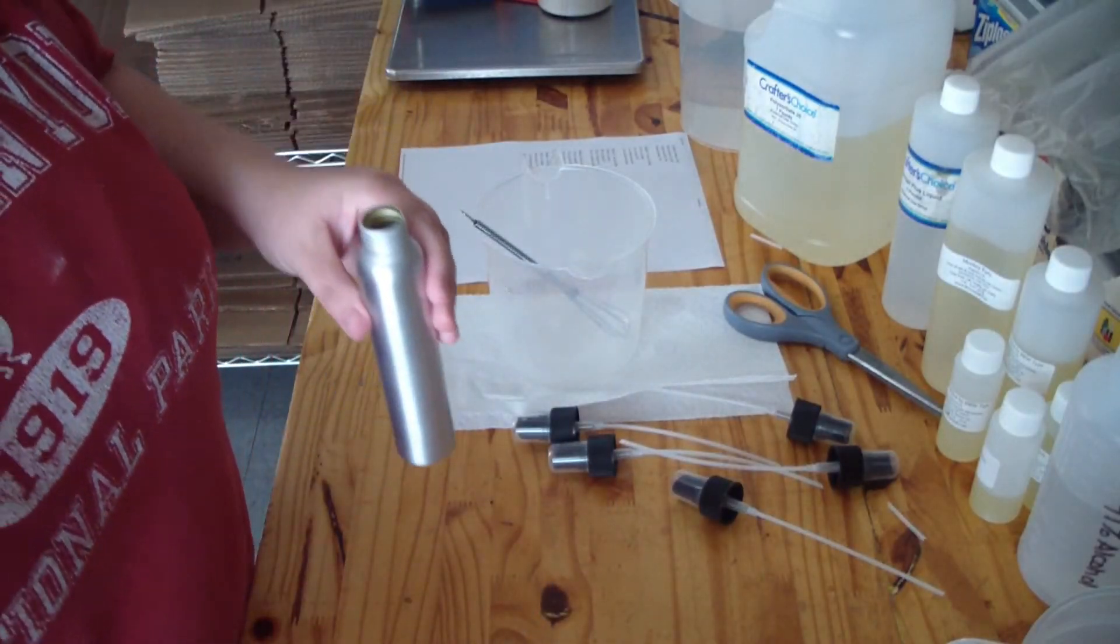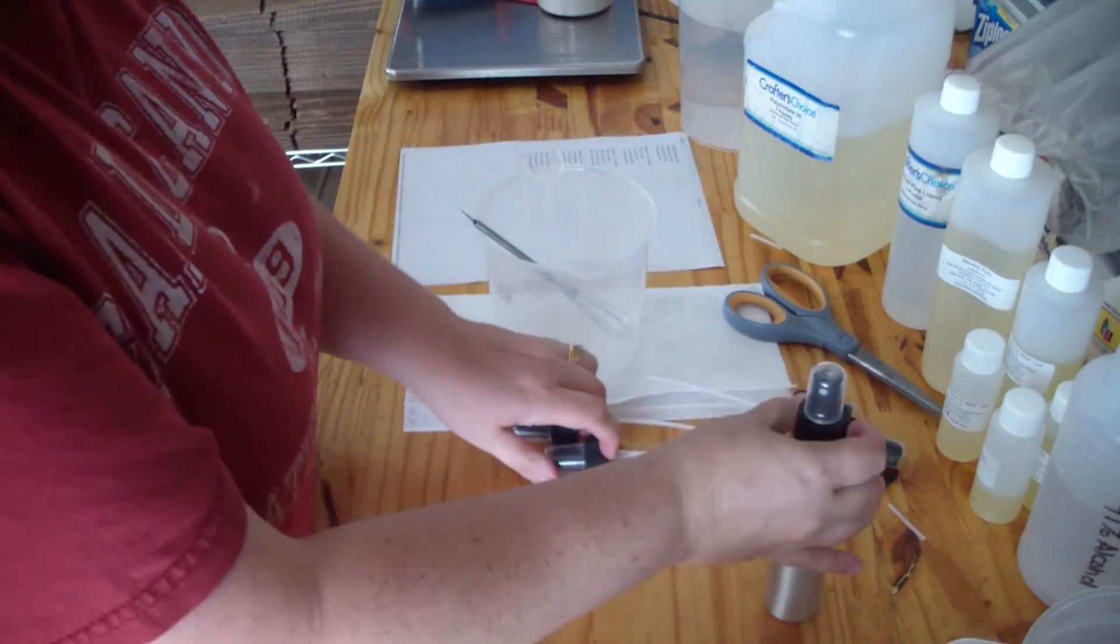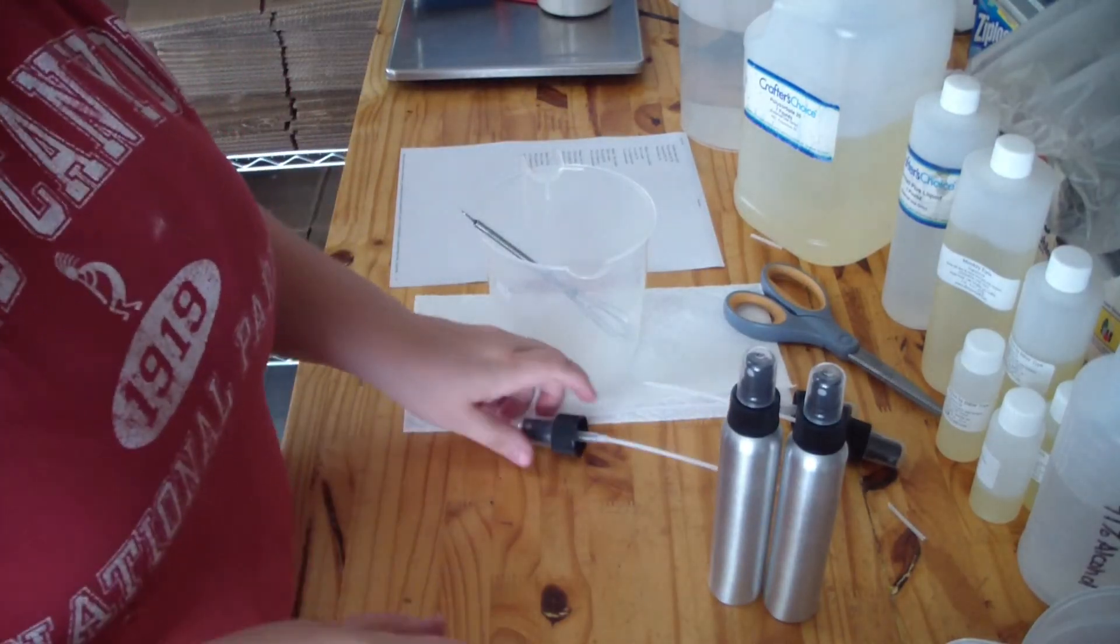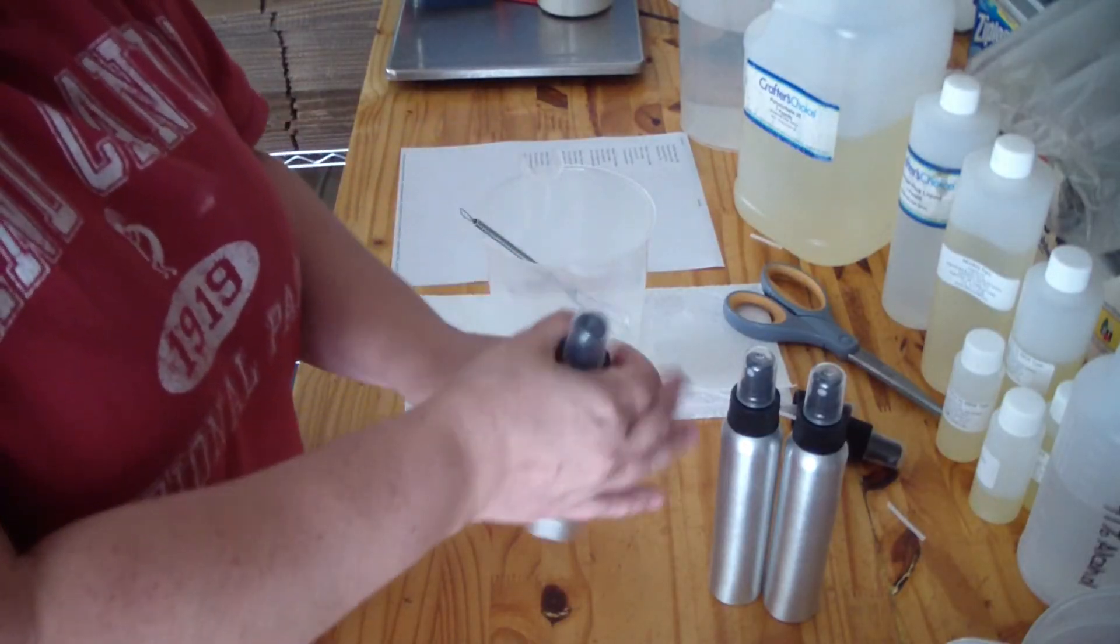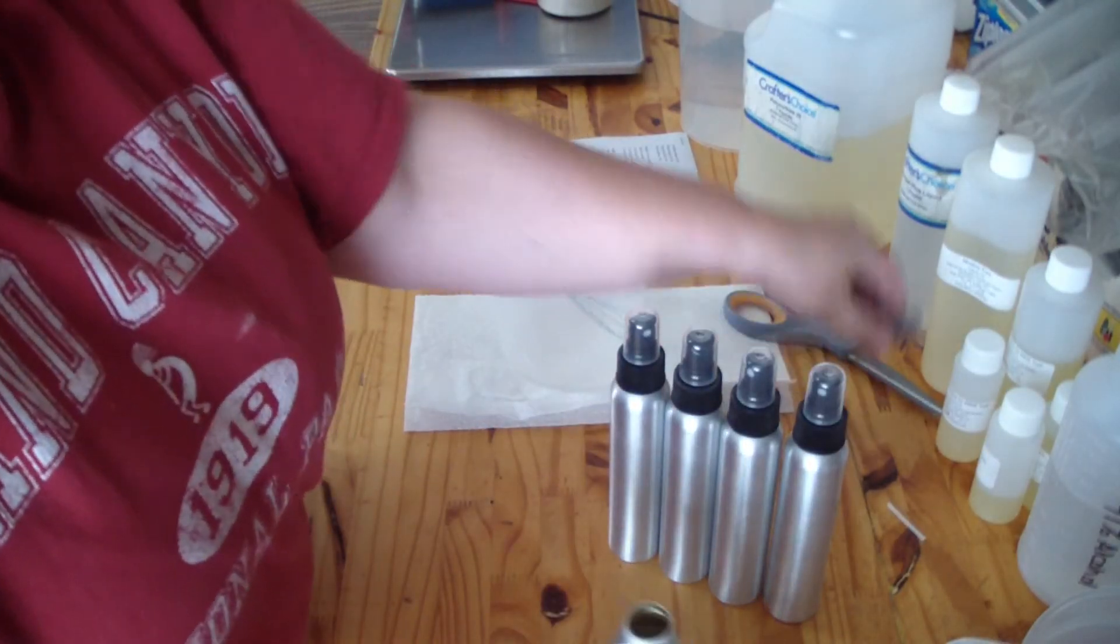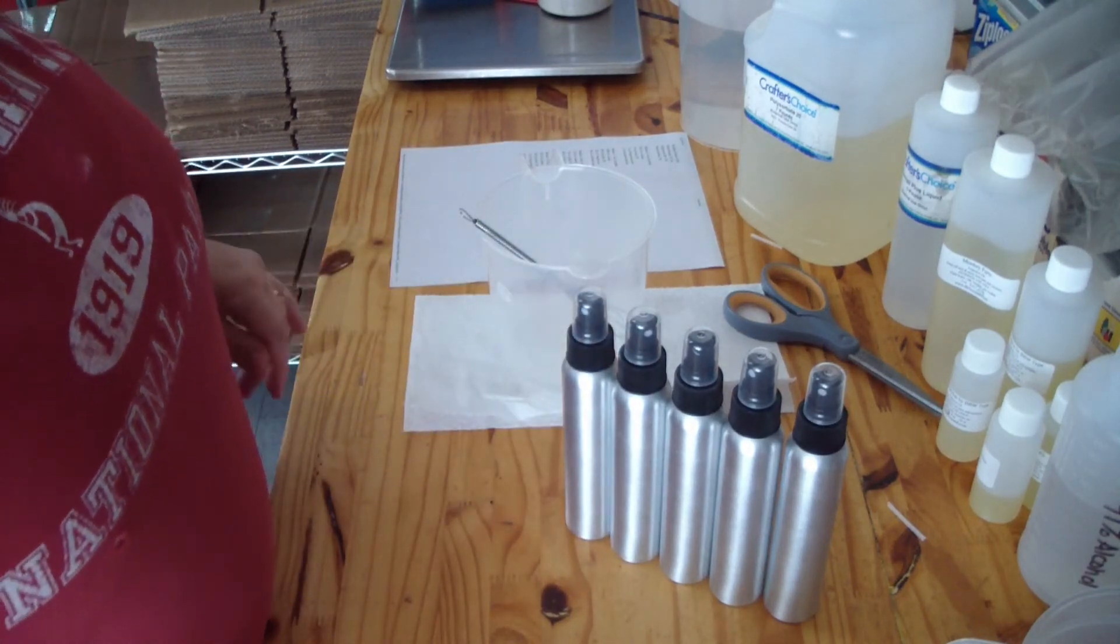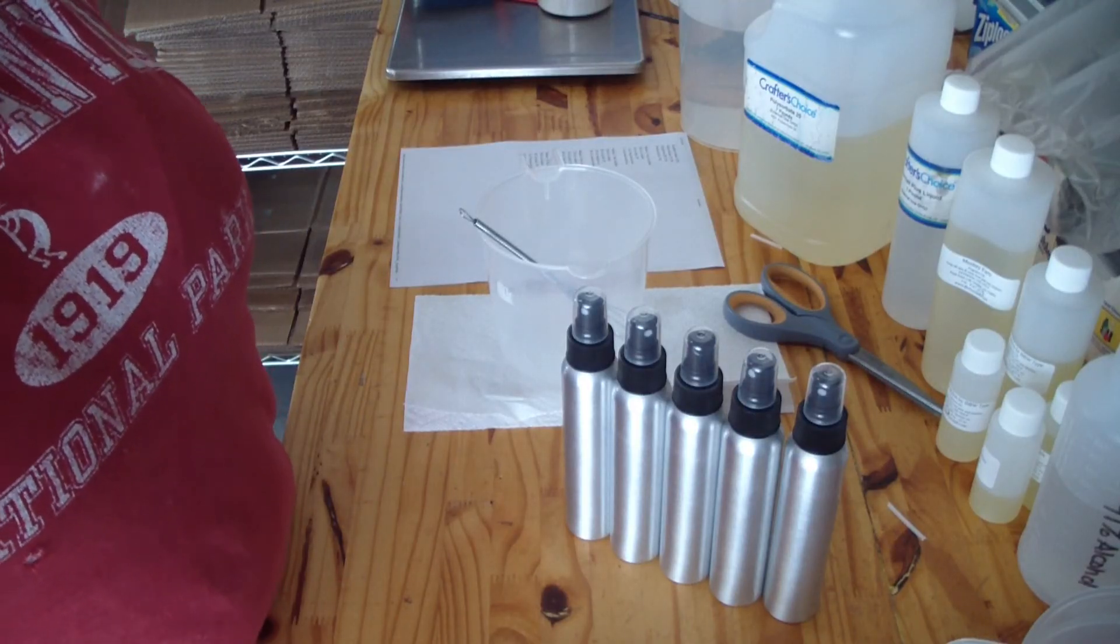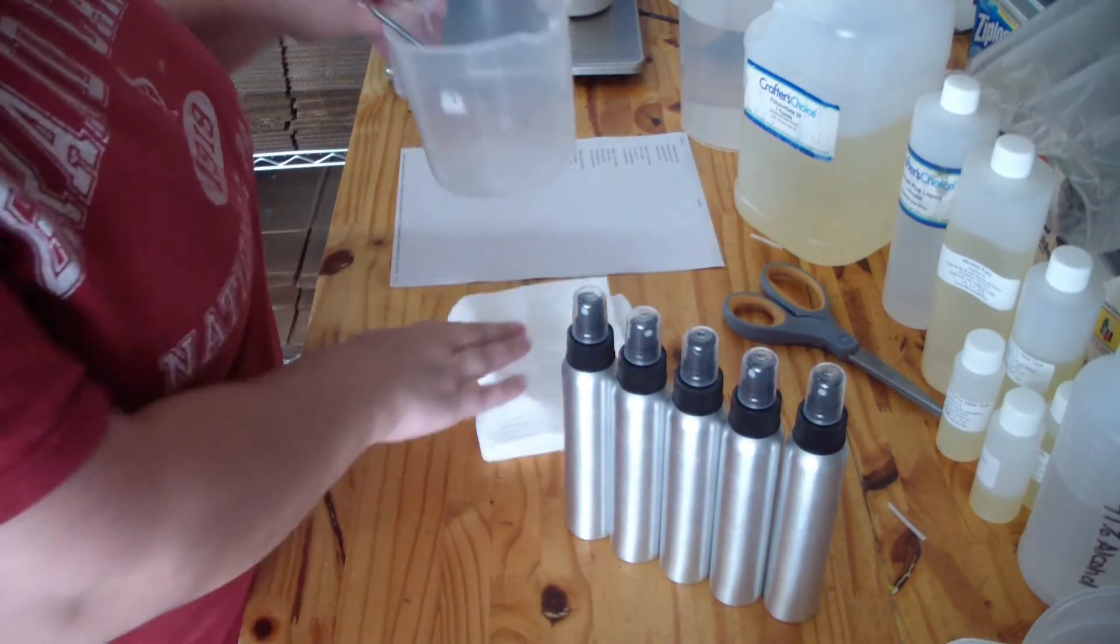Now we're gonna put our lids on. You don't want to cut too much off, you want to make sure that when you put your lids on that this reaches all the way to the bottom. And then you can put whatever labels you want on there. And that is how I make my room and linen sprays. I hope you guys enjoyed the video. I'm not sure what we're coming up with next month for you guys, but thank you all for being here and I will catch you later.